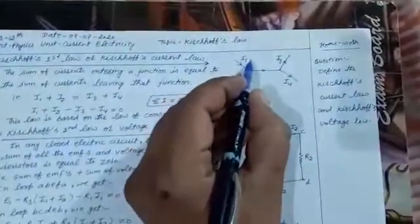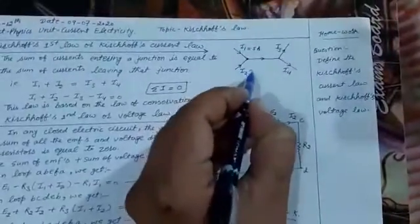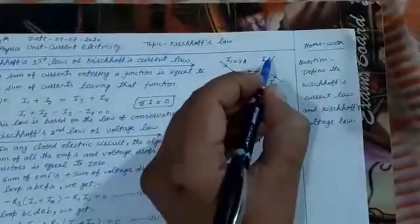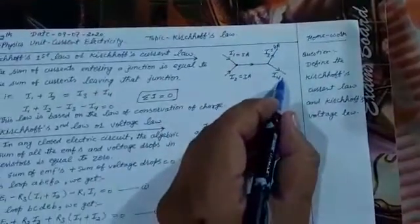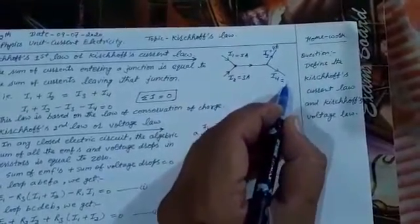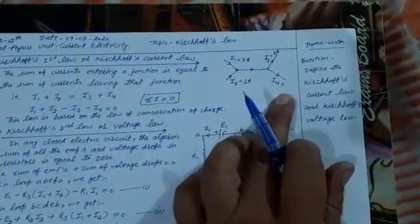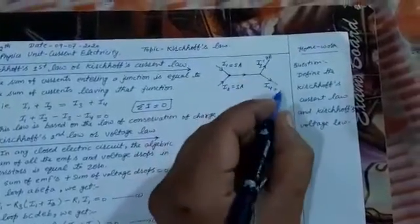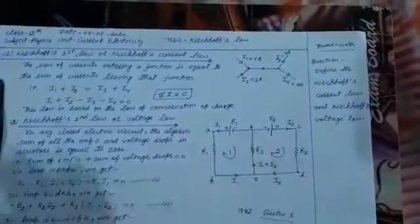For example, consider a numerical: 5A current is entering at one point and 3A current is entering at another point, while I3 is leaving with 4A. So the total current entering is 5 plus 3 equals 8 amperes, and 4 amperes is leaving, so I4 equals 4 amperes. This is a simple numerical you can solve.